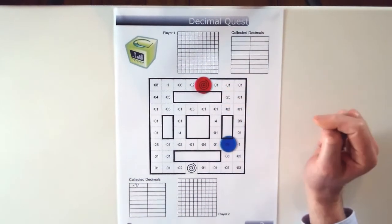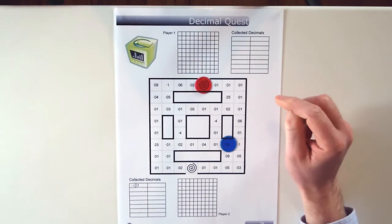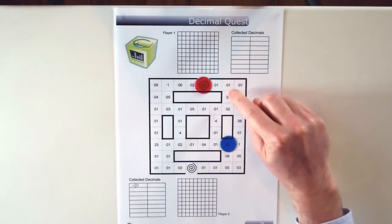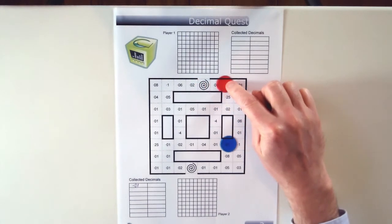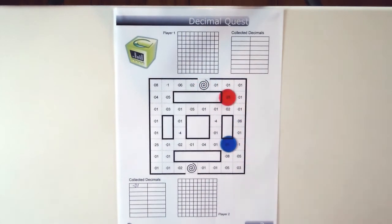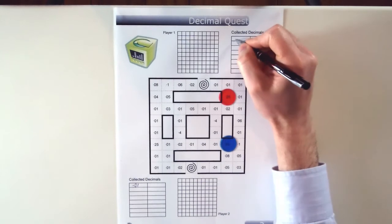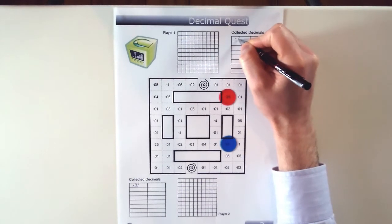And red's going to move, they're going to make a bit of a smarter decision I think and land on a bigger decimal. They can see 0.25 there. So they'll go 1, 2, 3 and land on 0.25 and write it in their collected decimals area.